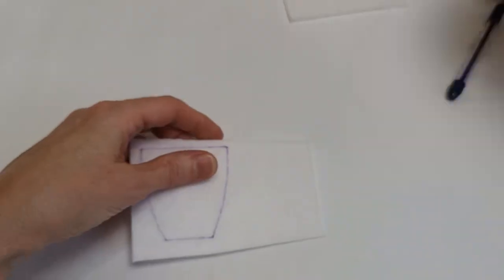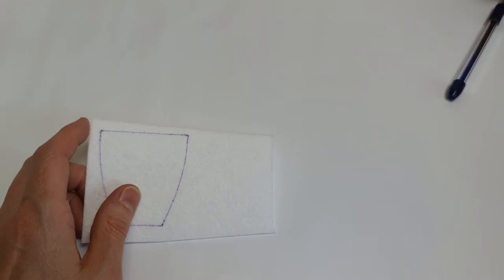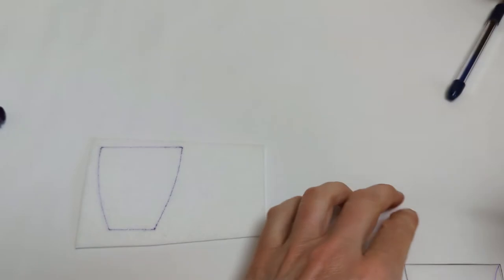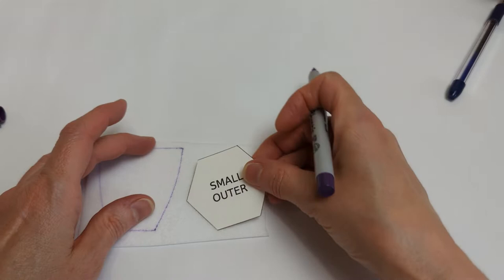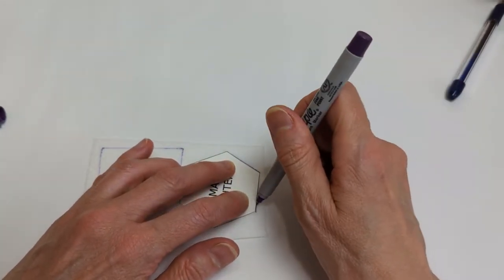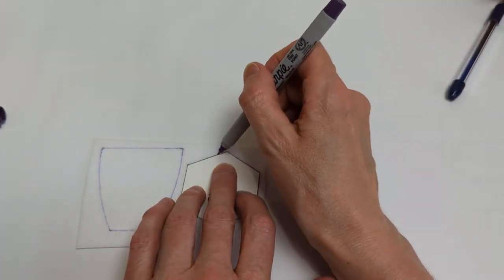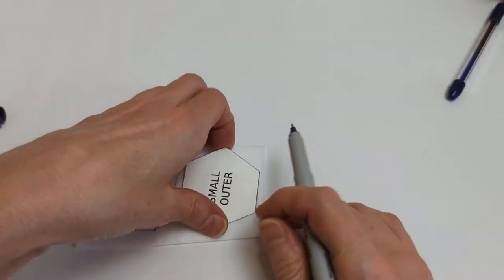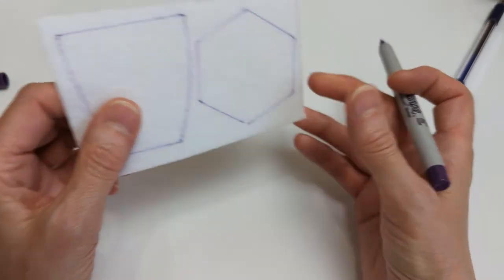Once you find this amazing stabilizer, take something like a fine pen and trace around the shape onto your pellon. You want this to be fairly accurate because this is what you're going to be covering with fabric to make your bowl. So you would trace one of those and six of these onto your stabilizer.